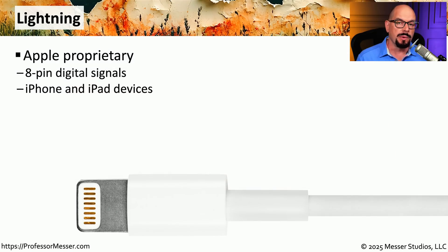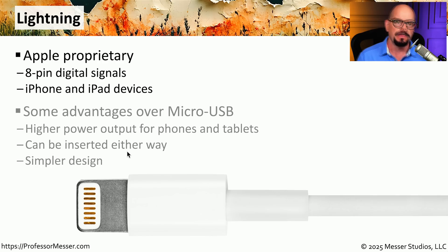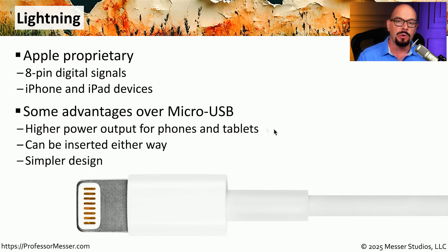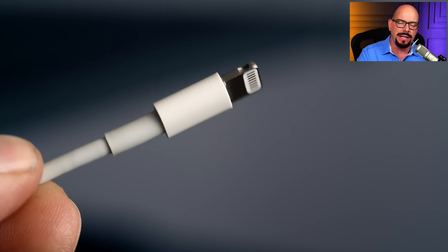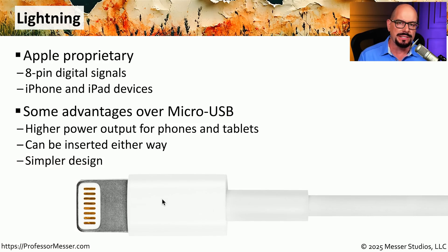If you're using an older mobile device from Apple, you may not be using a USB connection. You may instead be using a proprietary connection from Apple known as a Lightning connector. This Lightning connector has eight pins and is commonly used for older iPhone and iPad devices. Lightning was introduced to support higher power output for faster charging, can be inserted either way, and its relatively simple design made it easy to use across many different devices.